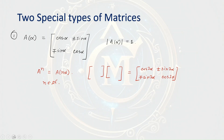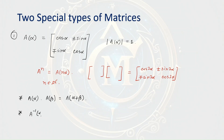Now, what are the other properties of this matrix? You have to keep in mind that A of alpha times A of beta is the same as A of alpha plus beta — another interesting property. Similarly, the inverse of this matrix, A inverse of alpha, is equal to simply A of minus alpha.